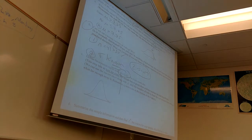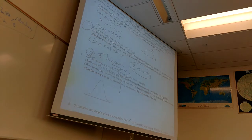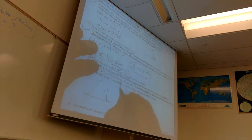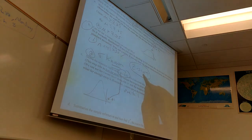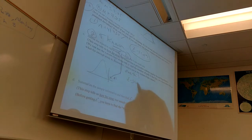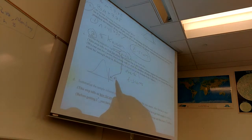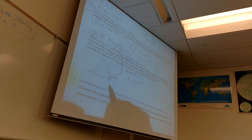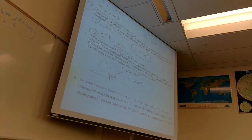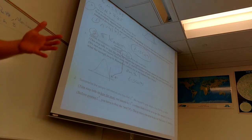We have a one-tail test, and we want alpha equals 0.01 to be in this tail. We're using Z-scores. On the T-score chart, it has tails and alpha already listed. T-scores become Z-scores when the sample gets large, so Z-scores are at the bottom row. Go all the way down to get a Z-score. With alpha equals 0.01, one tail, the critical value is 2.326.